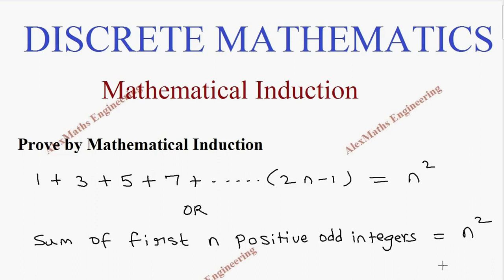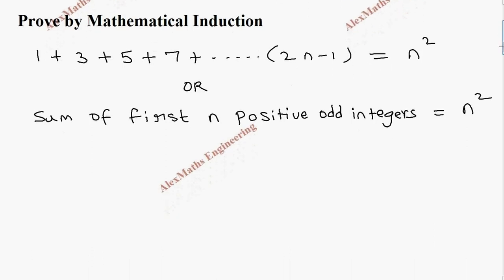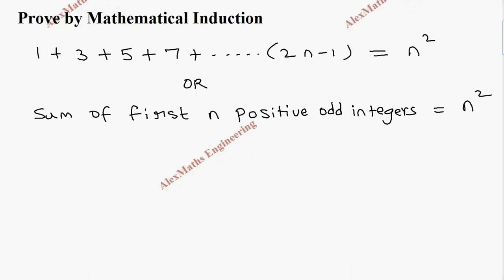Hi students, this is Alex. In this video we are going to prove by mathematical induction: 1 plus 3 plus 5 plus 7 dot dot dot 2n minus 1 equals n squared. This question can also be stated as: the sum of the first n positive odd integers equals n squared. Let's name this expression as P of n.